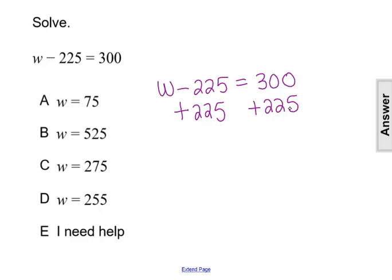Whatever I do to one side, I have to do to the other. So adding 225 to the left will undo subtracting 225 and leave me with just my variable w. It's completely isolated and alone now on the left.